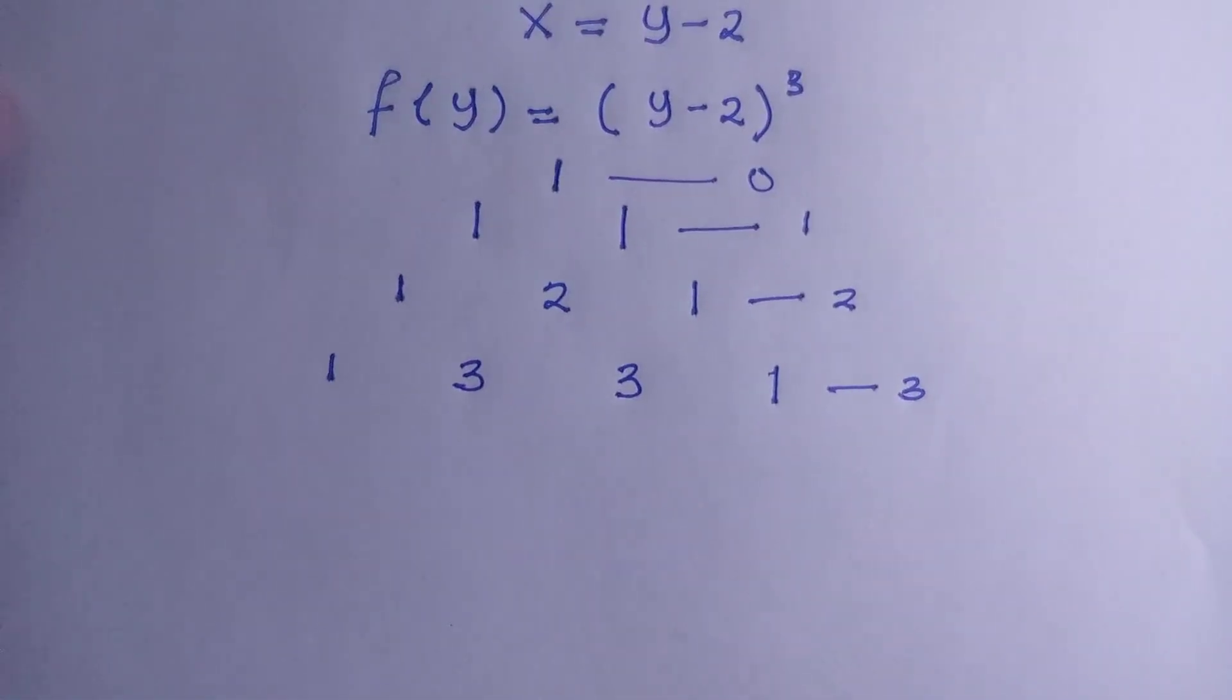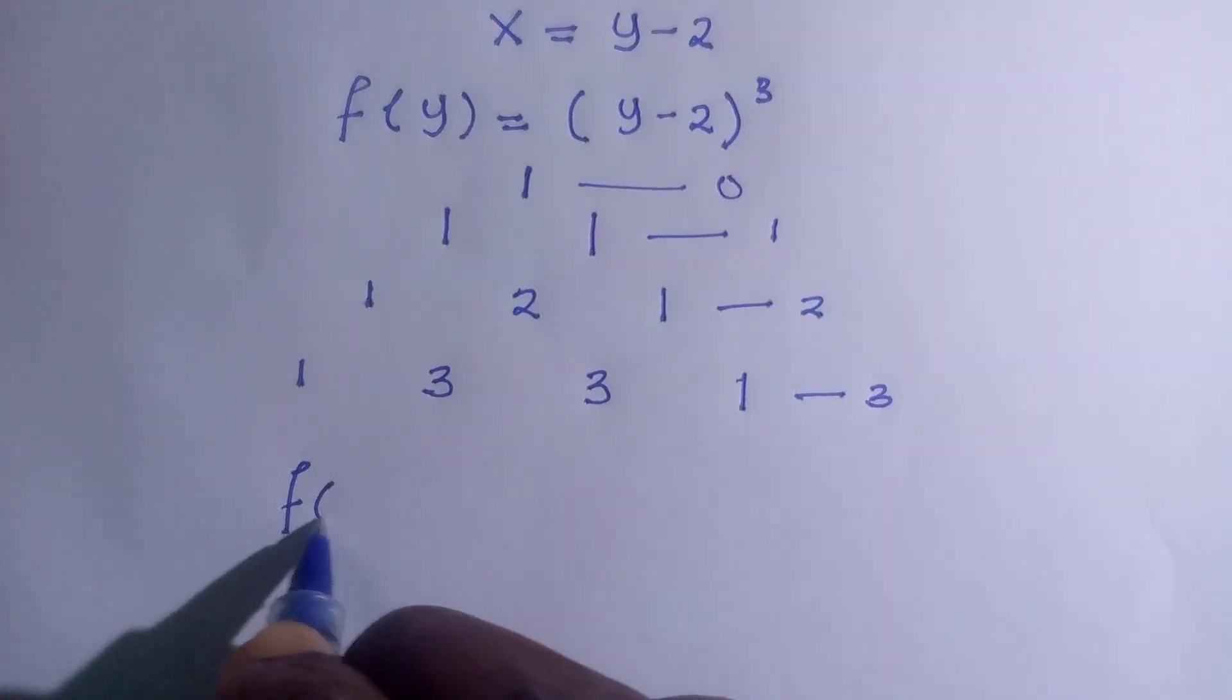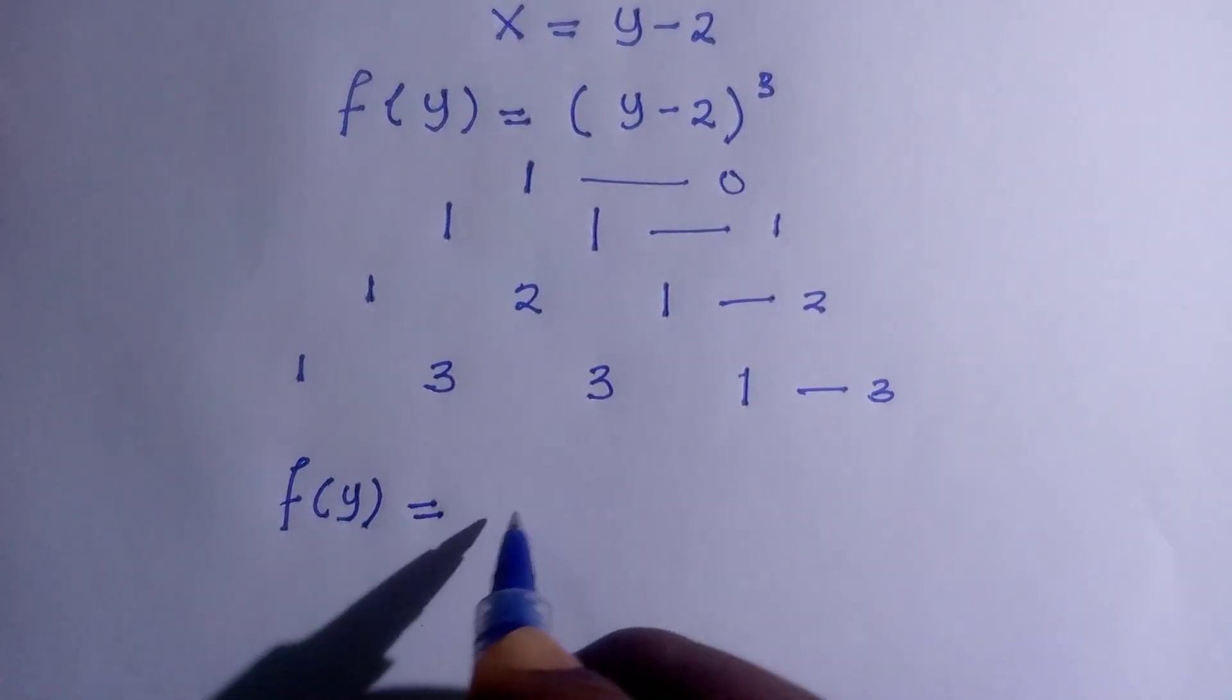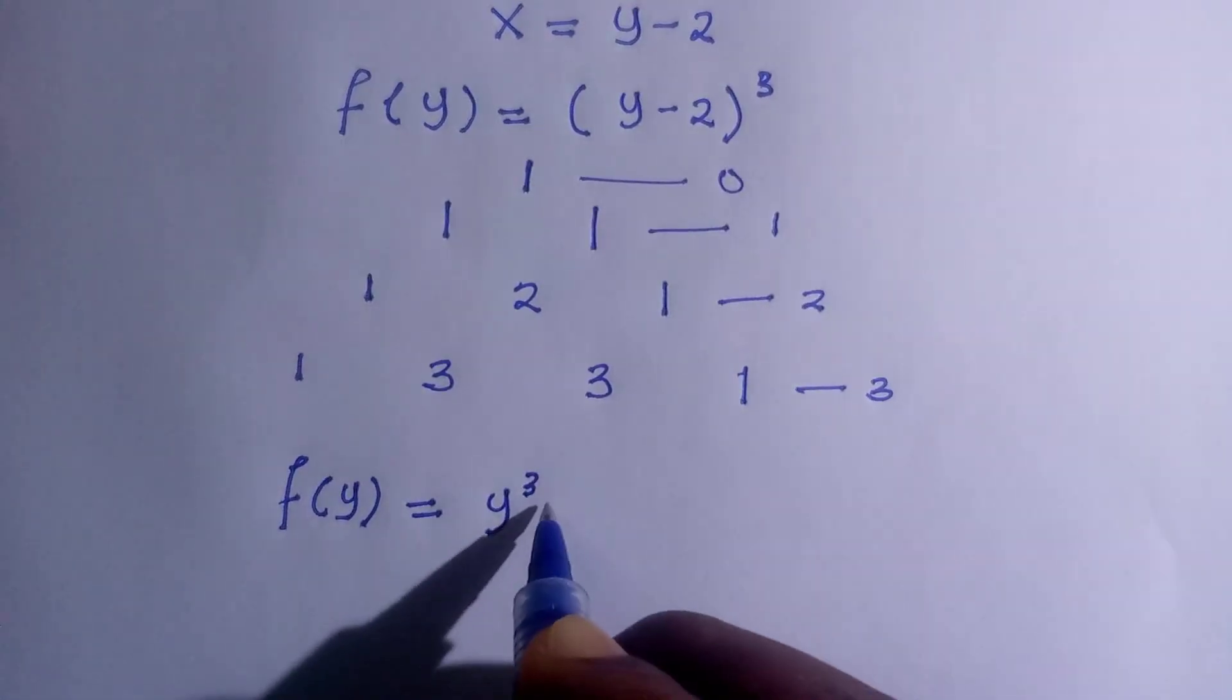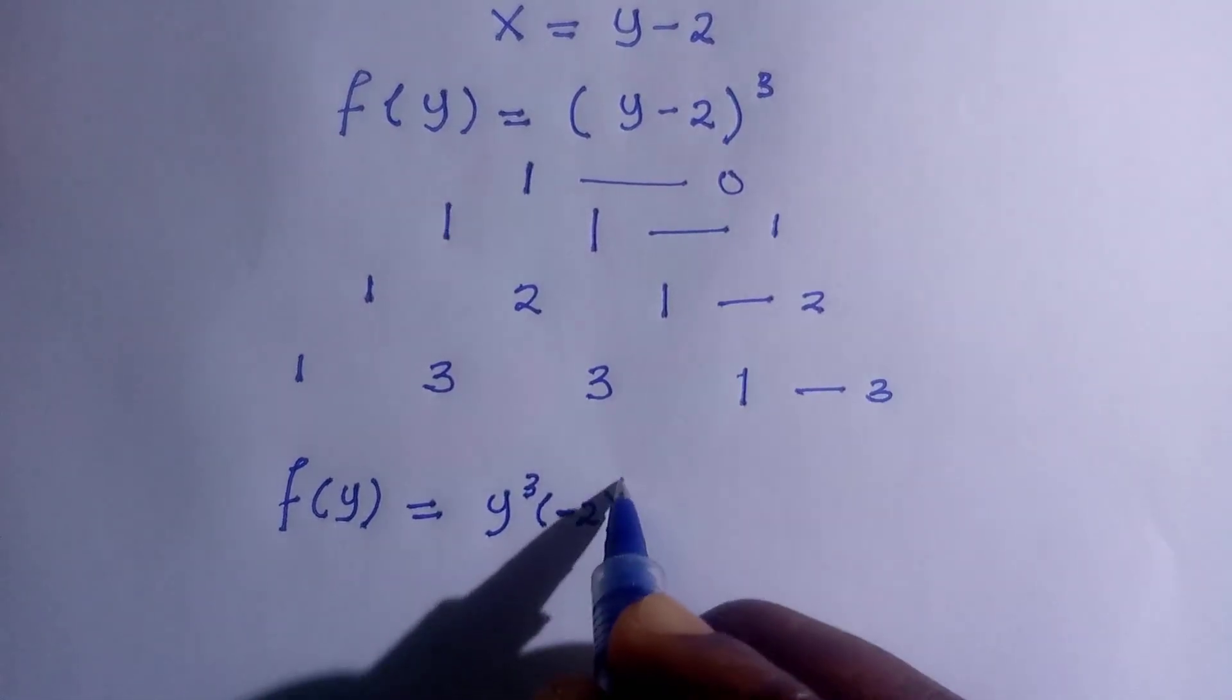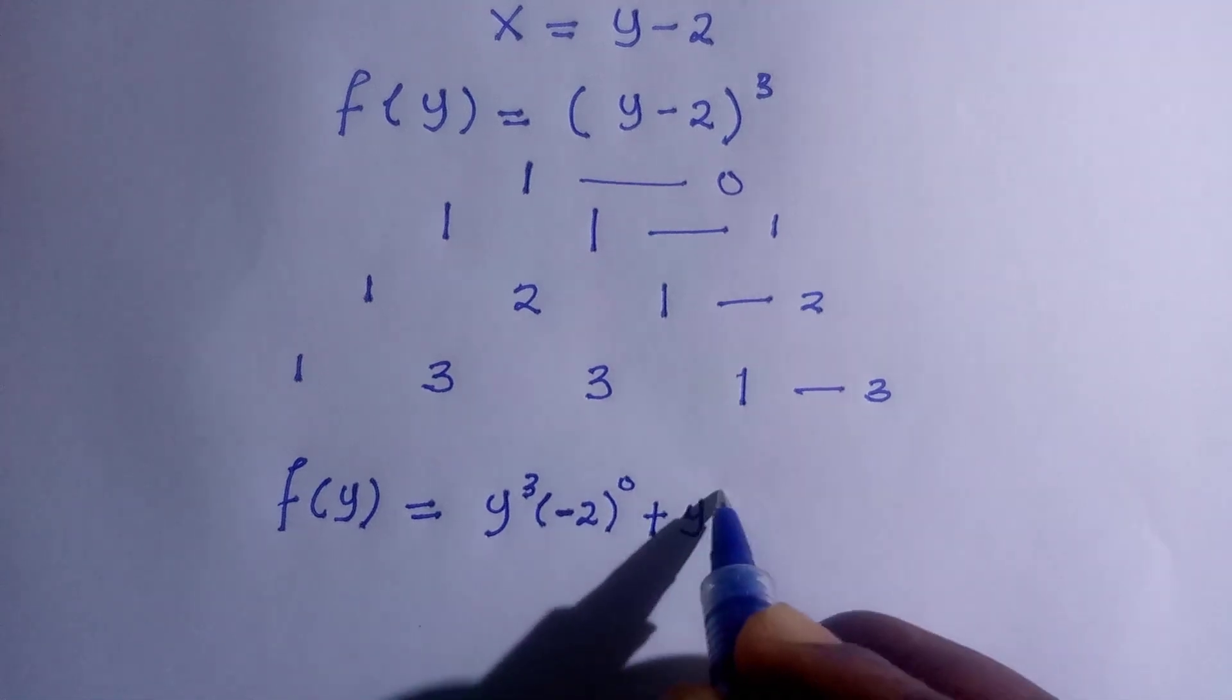So therefore, we are going to consider the expansion like this. We have f(y) equals, so when one is increasing, one will be decreasing, so that we have y to the power of 3, then minus 2 to the power of 0, plus y to the power of 2,